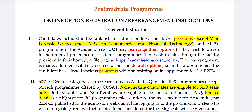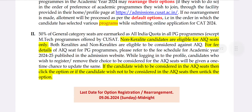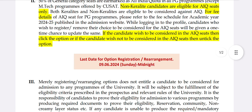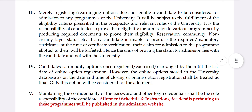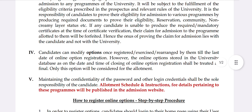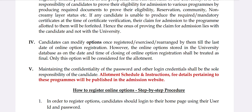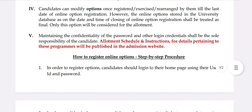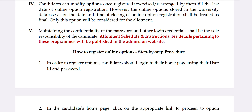There is an allotment schedule. If published on your website, you will be able to go to your website. This is the option registration — you can do it in a step-by-step procedure.